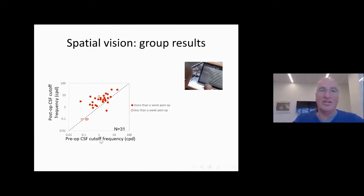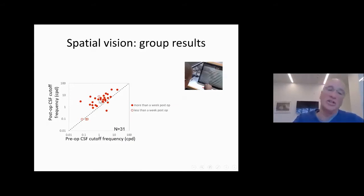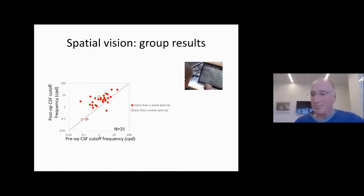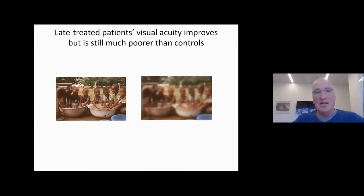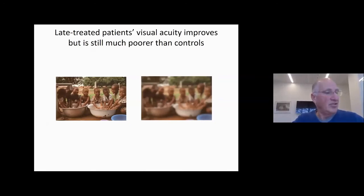Here are the group results. We plot the preoperative cutoff frequency versus the postoperative cutoff frequency. You can see that most points, almost all of them, are above the main diagonal, suggesting they did improve after surgery — which is good news. But they don't reach our performance; there's variability, but they do not reach normal typical adult performance. Visual acuity improves, but it is still much poorer than controls — contrast sensitivity reaches a cutoff frequency of the order of between 20 and 30 cycles per degree, so they still have a blurry image when viewing visual scenes.